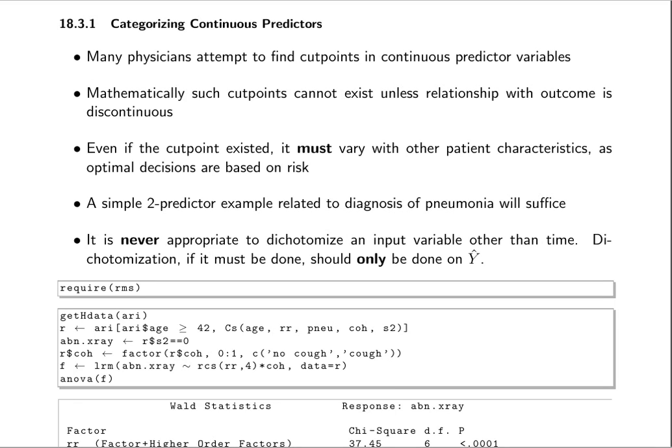This material is from the Information Loss Chapter of Biostatistics for Biomedical Research. We're going to discuss the pitfalls of categorizing continuous variables, and in this particular case, predictor variables.